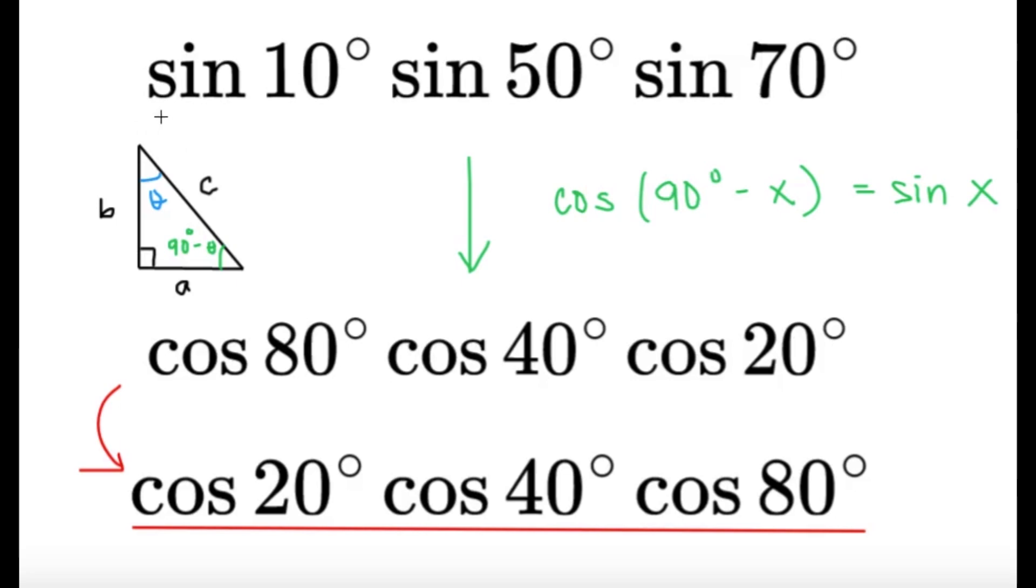Anyways, so the sine 10 degrees over here becomes cosine 80, sine 50 becomes cosine 40, and sine 70 degrees becomes cosine 20 degrees. And then just rearranging the terms with the commutative property of multiplication, we have something like that.